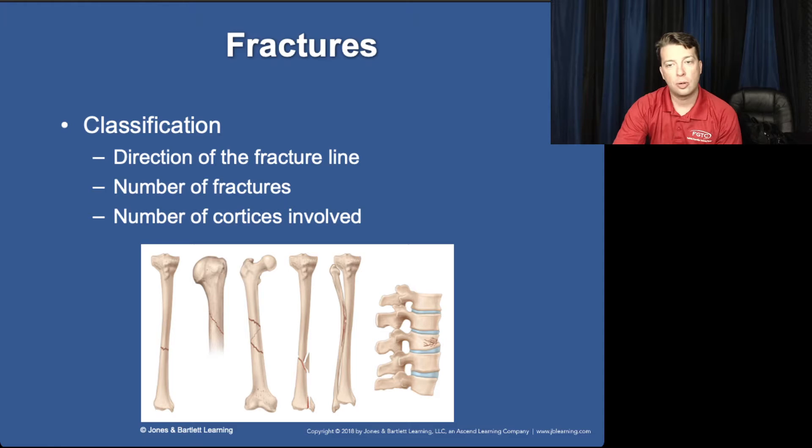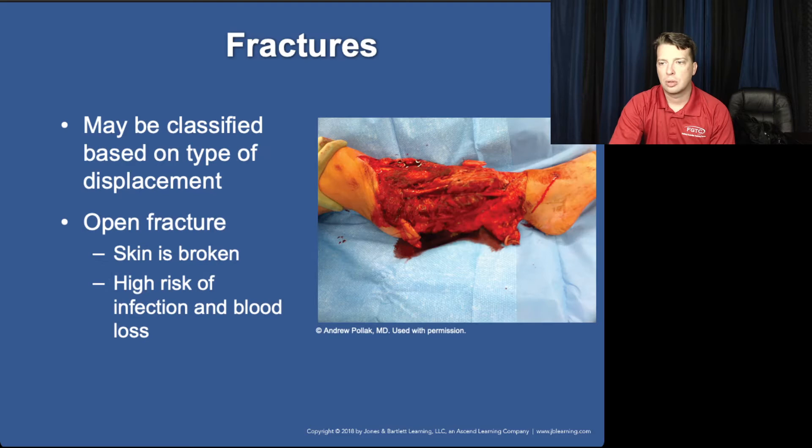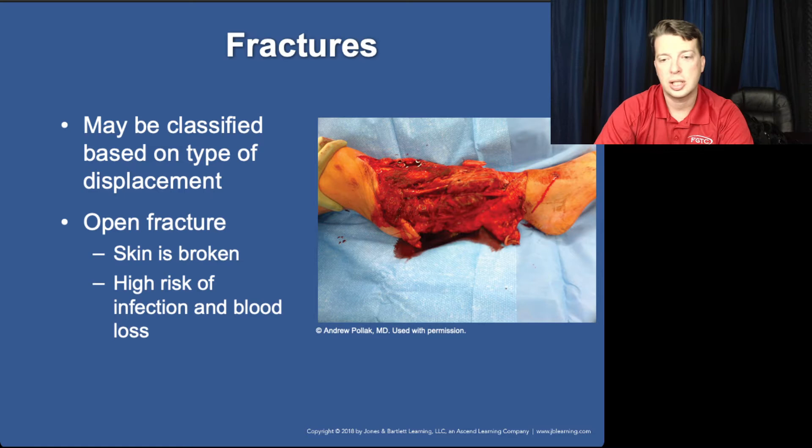These fractures can be simple or compound — basically still in position or displaced. This is obviously a much more significant concern when it's an open fracture. While this example looks like an open fracture with some crushing injury and degloving, open fractures can be as simple as a fractured ankle where the lower tibia has protruded outside of the skin then retracted, leaving only a small laceration.